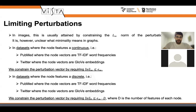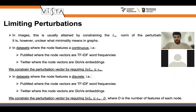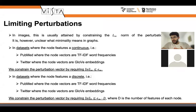A single node perturbation can perturb all of its features, and it could be very devastating if you don't limit it correctly. For example, if you have features which are between zero and one and you go over the limit of one, the model could act differently and the perturbation could be very devastating. So we have to somehow limit our perturbation.